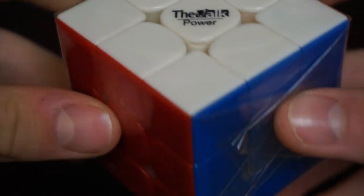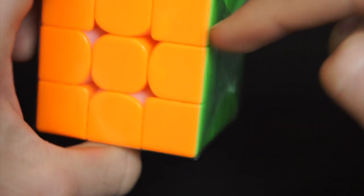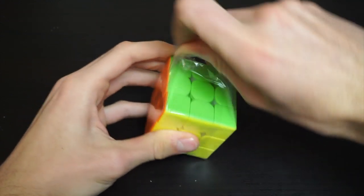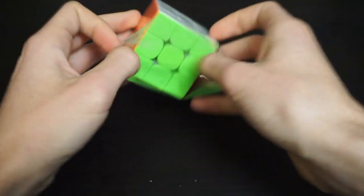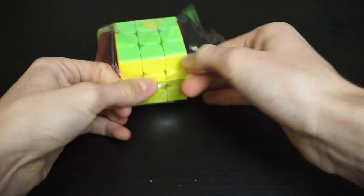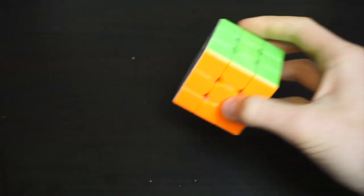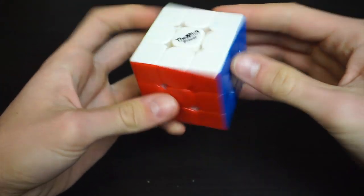I can already see that the internals are transparent. Here we go, the Valk Power.